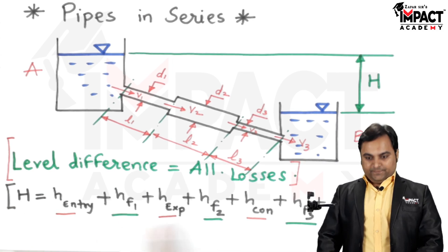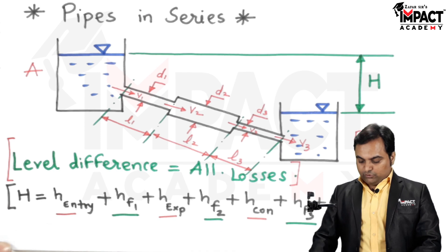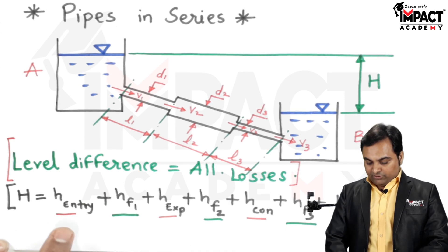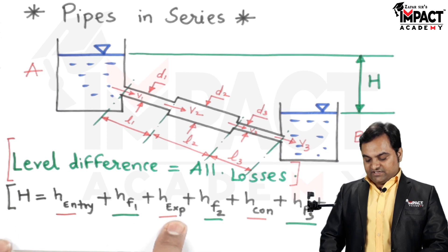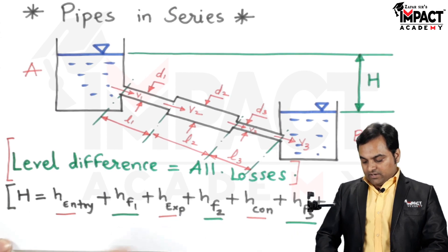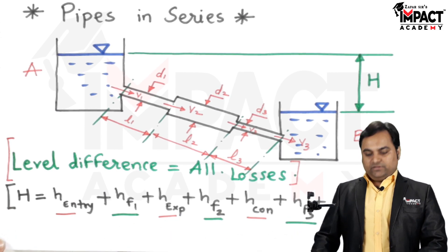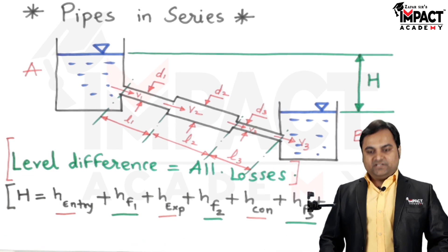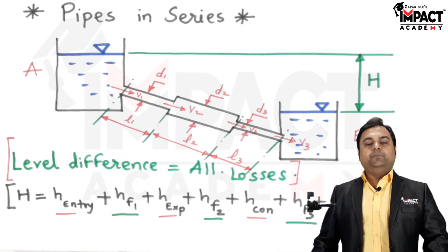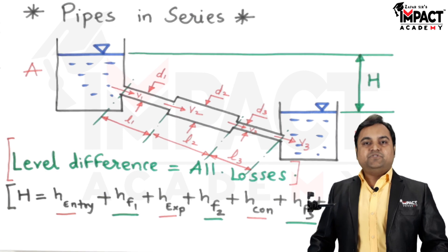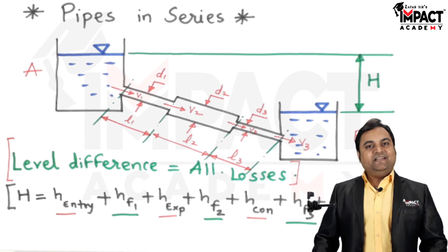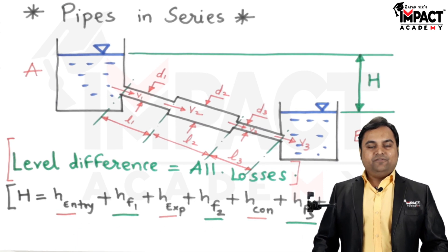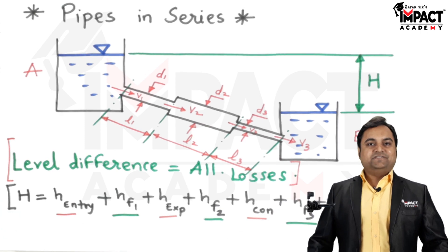The level difference equals all these losses. For the individual losses — H_entry, HF1, sudden expansion, up to H_exit — links to the individual explanation videos will be provided in the description below, where I have explained how to derive each of these formulas. You can refer to those and complete this concept.